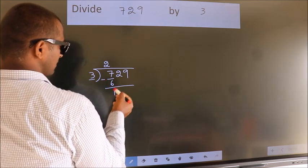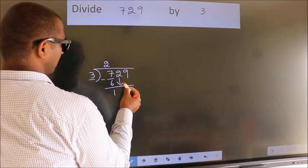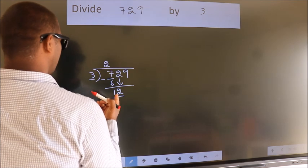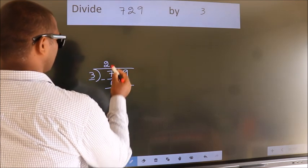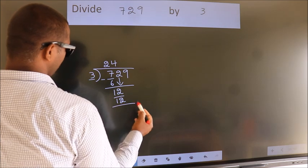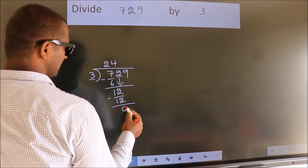After this bring down the beside number. So 2 down, so 12. When do we get 12 in 3 table? 3 times 4 is 12. Now we subtract. We get 0.